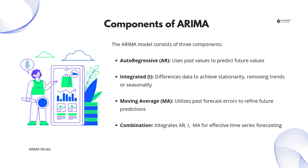Let's break down the ARIMA model into its three key components. The first is autoregressive, or AR, which uses past values to predict future values. The second is integrated, or I, which ensures stationarity by removing trends or seasonal effects through differencing. Finally, moving average, or MA, refines future predictions by incorporating past forecast errors. By combining these three components, ARIMA becomes a powerful tool for time series forecasting.